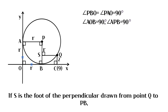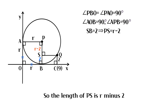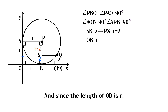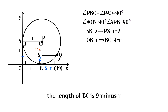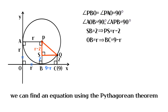If S is the foot of the perpendicular drawn from point Q to PB, the length of SB is 2, so the length of PS is r minus 2. And since the length of OB is r, the length of BC is 9 minus r. So in triangle PSQ, we can find an equation using the Pythagorean theorem.